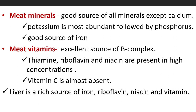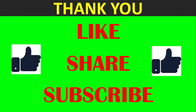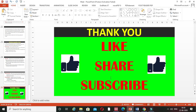Meat minerals: Meat is a good source of all minerals except calcium. Potassium is most abundant, followed by phosphorus. It is also a good source of iron. Meat vitamins: Meat is an excellent source of B complex vitamins — thiamine, riboflavin, and niacin are also present. Vitamin C is almost absent in meats. Liver is a rich source of iron, riboflavin, niacin, and other vitamins.